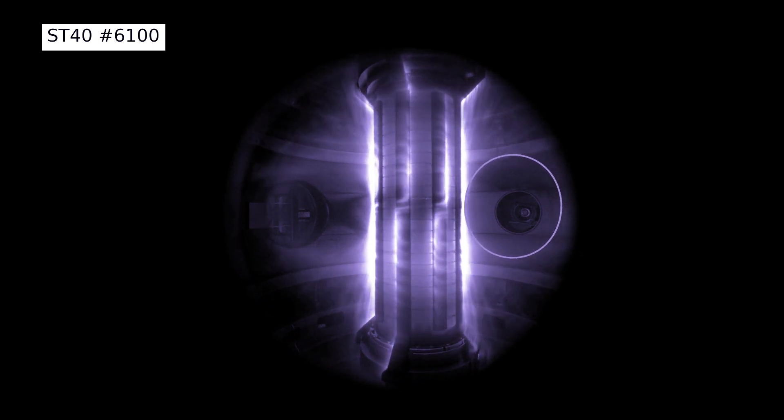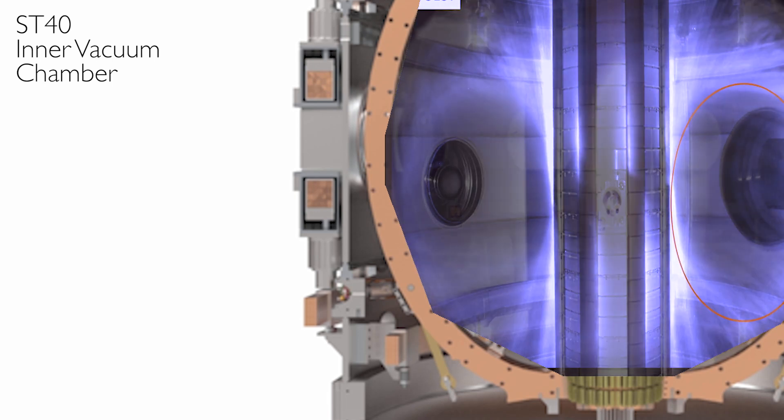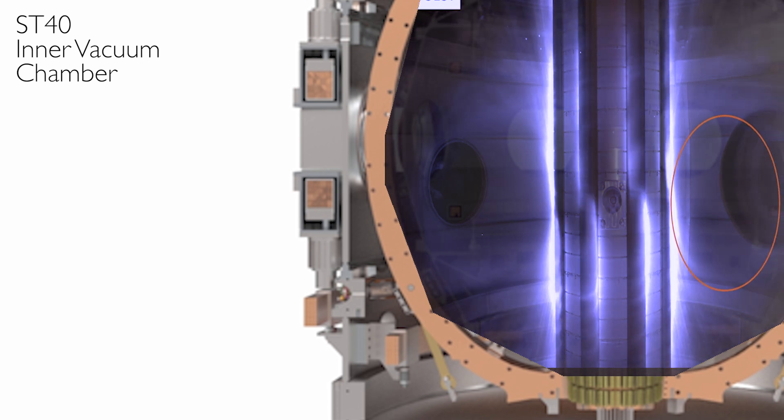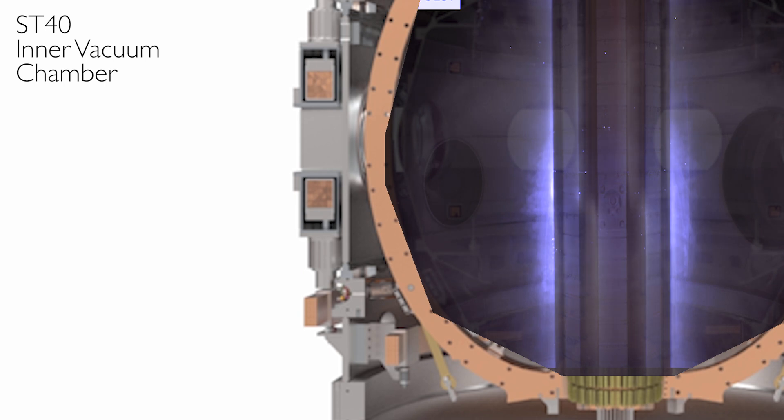In the diverter we can handle these very high heat loads, and it also separates the plasma material interactions from the main plasma. So any sputtering or any impurities that come off the diverter when it's exposed to these high heat loads don't enter the plasma, and that allows us to keep the plasma very pure and get high performance.